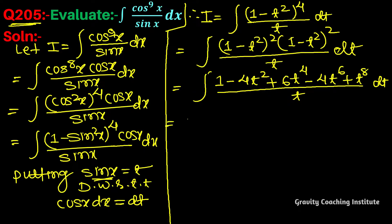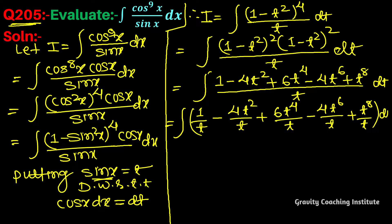Then we split the fraction, so it becomes 1 by t minus 4 t square by t plus 6 t to the power 4 upon t minus 4 t to the power 6 upon t plus t to the power 8 upon t dt.